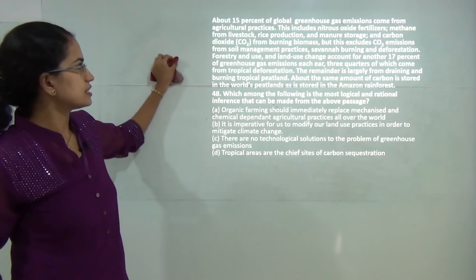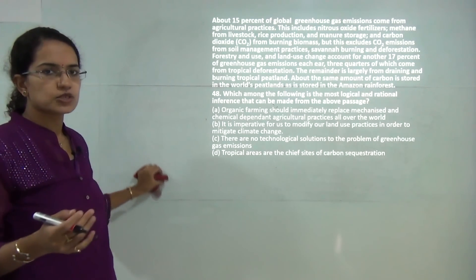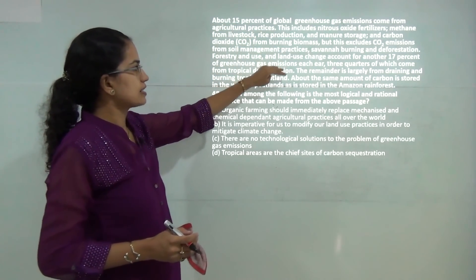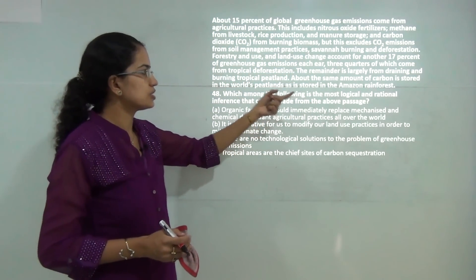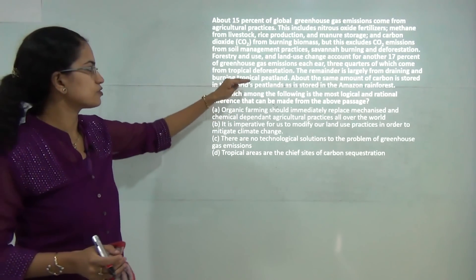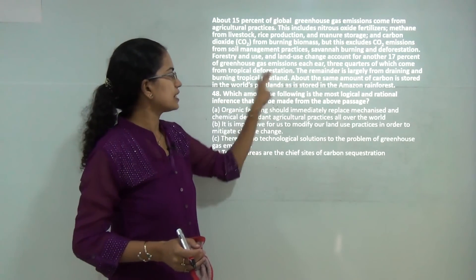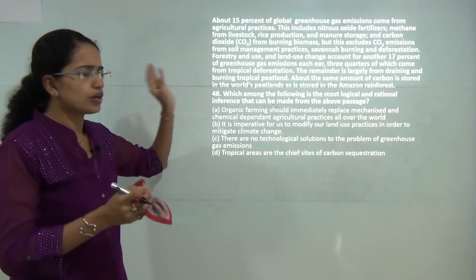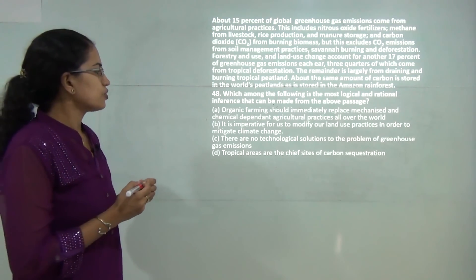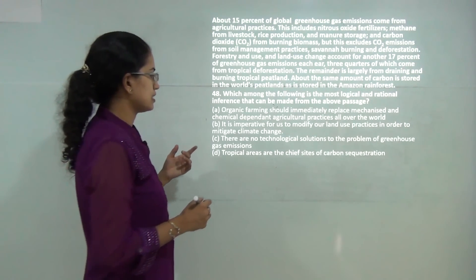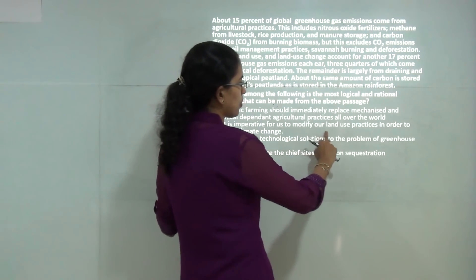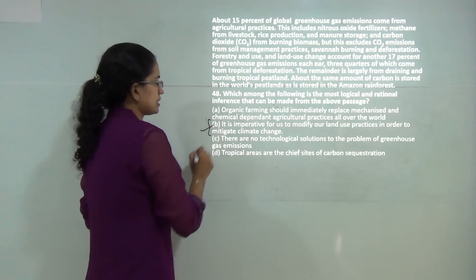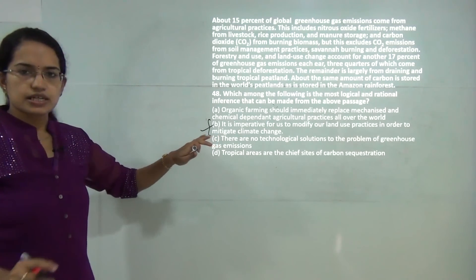The last passage question talks about global greenhouse gases. Fifteen percent comes from agricultural practices, the remaining 17 percent comes from land use changes, of which three-fourths comes from deforestation and the remaining from tropical peatland. The main inference is an imperative to modify land use practices in order to mitigate climate change. So B is the correct option.